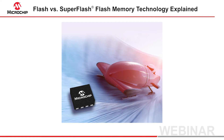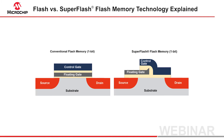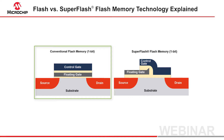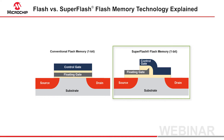Hi and welcome to another video from Microchip's memory technology series. This video will explain how both conventional flash cells and super flash cells are both written and erased. We're going to use a side-by-side comparison to do this. This is a cross-section of a flash memory cell, and over here is the same cross-section of a super flash memory bit.